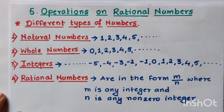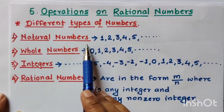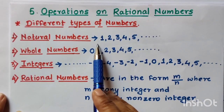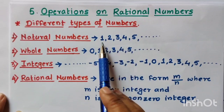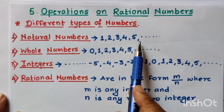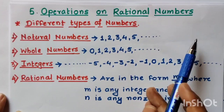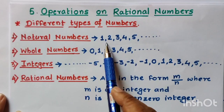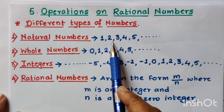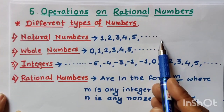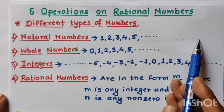The first type of numbers are natural numbers, also known as counting numbers. They start from 1, 2, 3, 4, 5 and go on increasing. So 1 is the smallest natural number and there are uncountably many natural numbers.